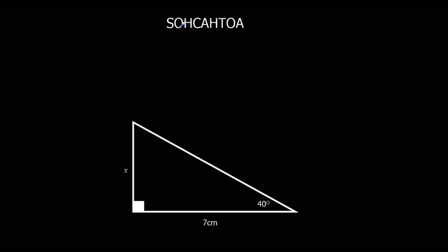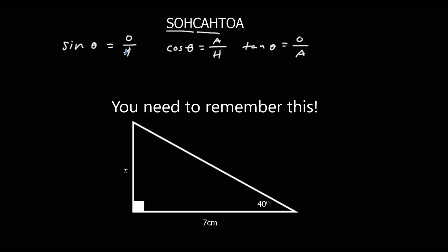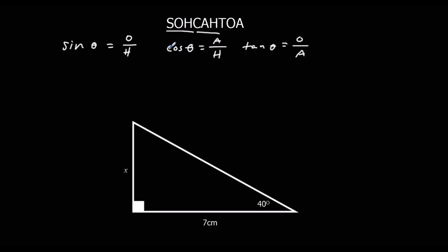Let's start with what SOHCAHTOA stands for. Sine of the angle — this little theta symbol means the angle, whatever it is. Sine theta, the SOH part, equals opposite over hypotenuse. Cos of the angle, cos theta, equals adjacent over hypotenuse. And tan of the angle equals opposite over adjacent. So O, A, and H are the sides in the triangle.